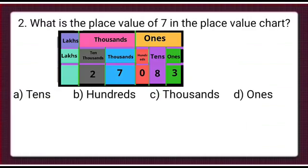Next question: What is the place of number 7 in the place value chart? Children, we will look at the place value chart. At the 1's place there is number 3, at the 10's place there is number 8, at the 100's place is number 0, at the 1000's place there is number 7 — so the place of number 7 is 1000's. At the 10,000's place there is number 2. The correct answer is part C.